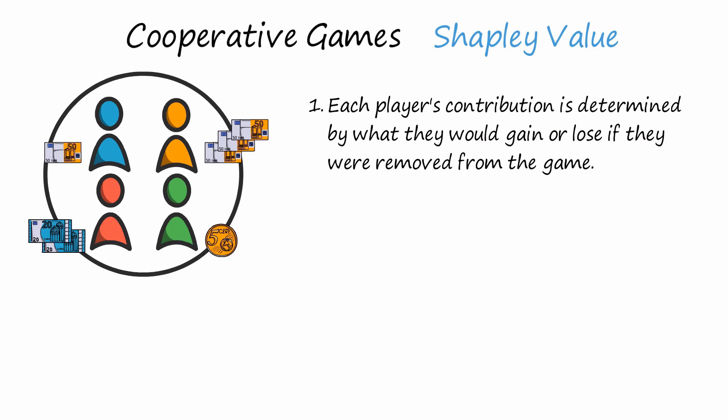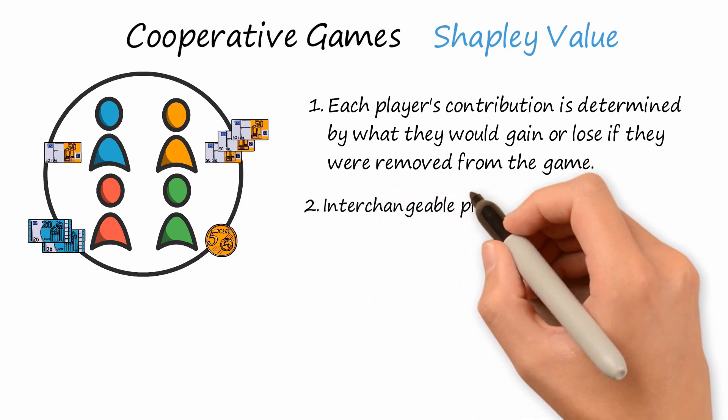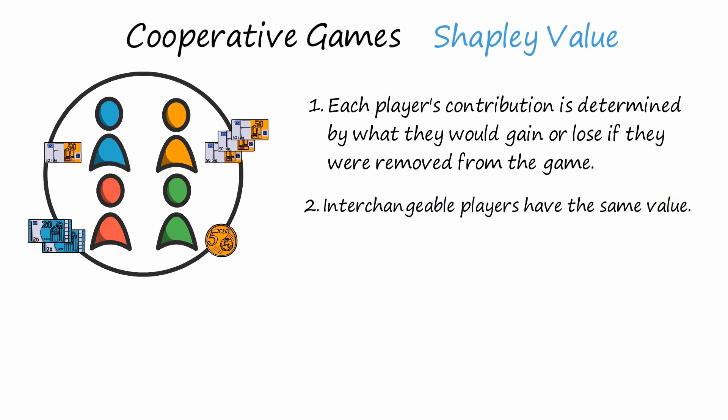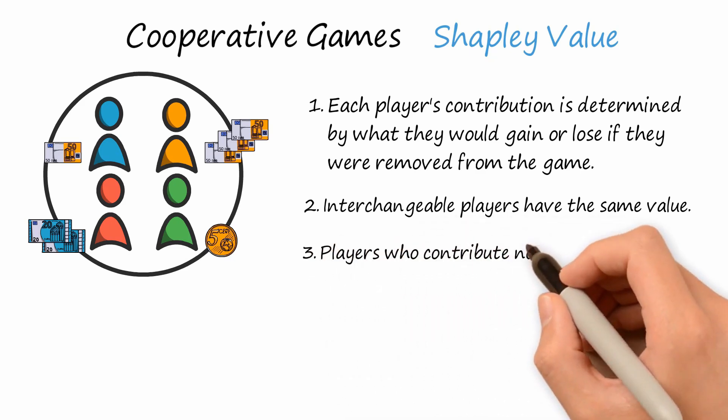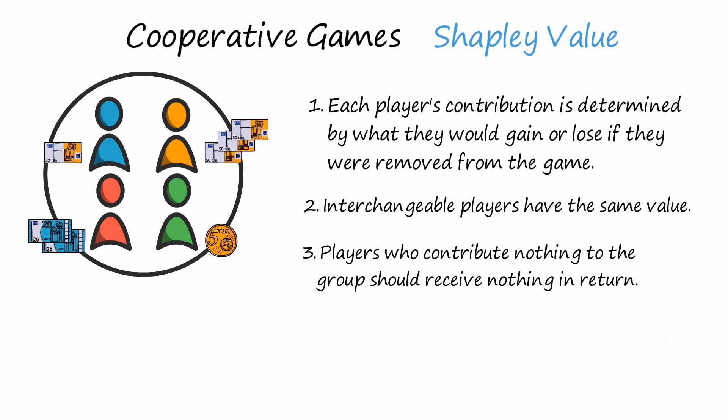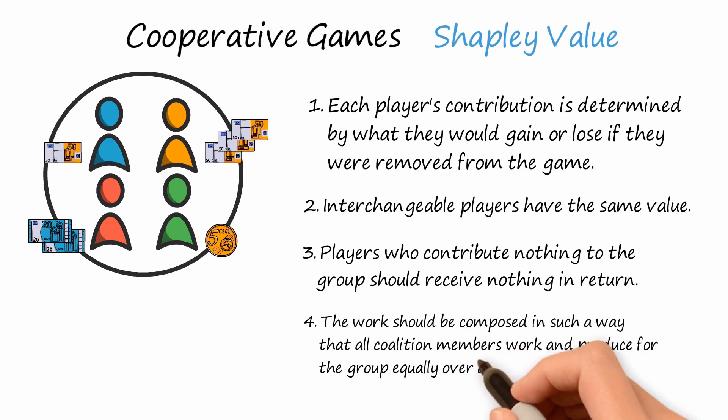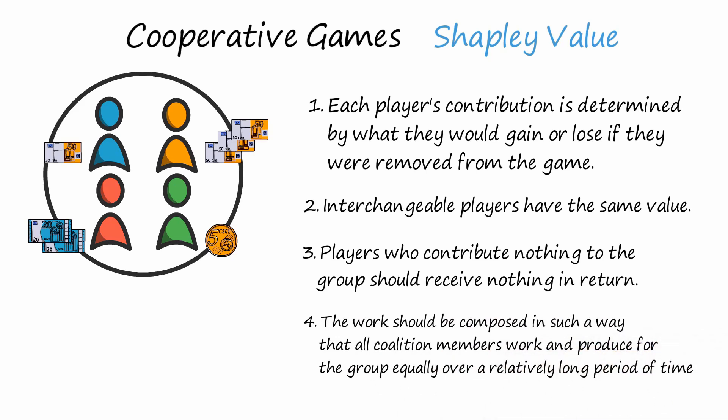For example, if you sell ice creams in a cafe and sell 100 ice creams a day, and one day you are sick and the shop sells 100 fewer ice creams because of it, your contribution margin is 100 ice creams. Interchangeable players have the same value — if two people bring the same contribution to the coalition, e.g. they both produce 100 ice creams a day, they should be rewarded the same. Players who contribute nothing to the group should receive nothing in return. However, exceptions exist — if a member has had an accident and is injured, the coalition may decide to pay them something anyway. The work should be composed so that all coalition members work and produce for the group equally over a relatively long period of time.